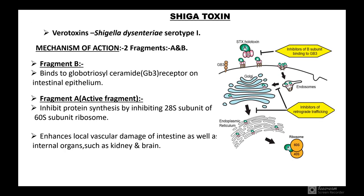Shiga toxin is a verotoxin secreted by Shigella dysenteriae serotype 1. The mechanism of action involves two fragments. Fragment B binds to the globotriaosylceramide GB3 receptor on intestinal epithelium. Fragment A is the active fragment and inhibits protein synthesis by inhibiting the 28S subunit of the 60S ribosomal subunit. It enhances local vascular damage of the intestine as well as internal organs such as kidney and brain.